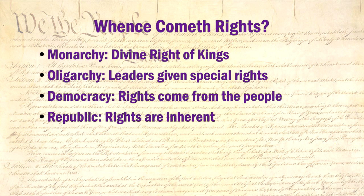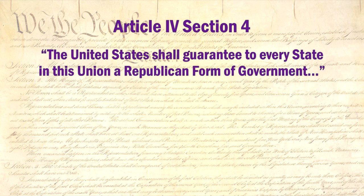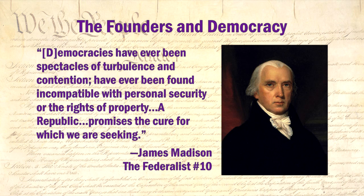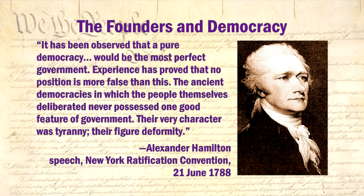The fact of the United States being a republic is mentioned in Article 4, Section 4, where it requires the United States to guarantee to every single state a republican form of government. This doesn't mean you have to vote Republican — it means that the United States will not allow any group, not even a majority, to infringe on the rights of the people. While the Constitution has nothing to say about democracy, the founders certainly did. In Federalist Number 10, James Madison addresses this. Alexander Hamilton said: 'It has been observed that a pure democracy would be the most perfect government. Experience has proved that no position is more false than this. The ancient democracies in which the people themselves deliberated never possessed one good feature of government. Their very character was tyranny, their figure deformity.' There are many other such examples — our founders simply did not want a democracy.